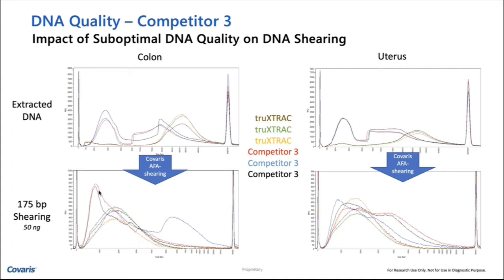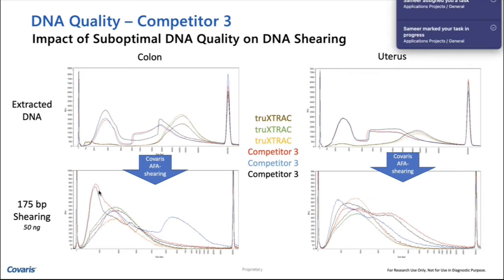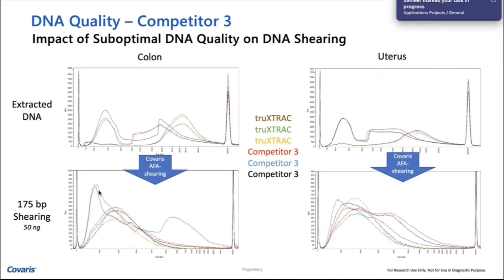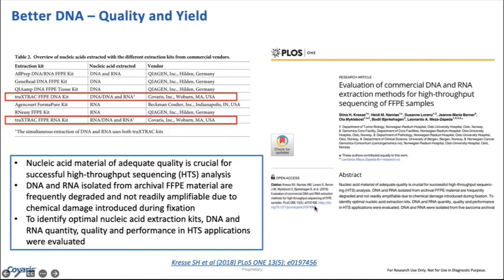If you're targeting 175 base pairs, your deviation is probably plus or minus 5 or so at best with AFA. There is a lot more variability when working with enzymes. Similarly, other commercially available kits working with FFPE samples directly show much higher variability because they are inefficient and not using AFA.